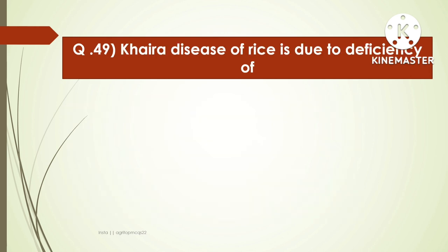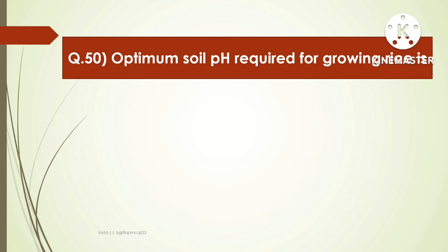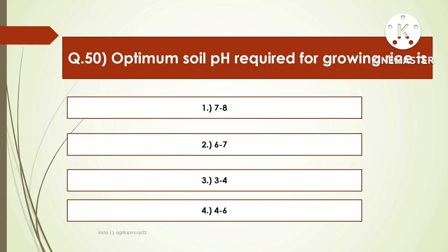The next question is: Khaira disease of rice is due to deficiency of — options are iron, boron, phosphorus, or zinc. The right answer is zinc. Khaira disease of rice is due to deficiency of zinc. It is a nursery disease. The next question: the optimum soil pH required for growing rice is — options are 7-8, 6-7, 3-4, or 4-6. The right answer is 4-6. Rice crop requires acidic soil for cultivation.